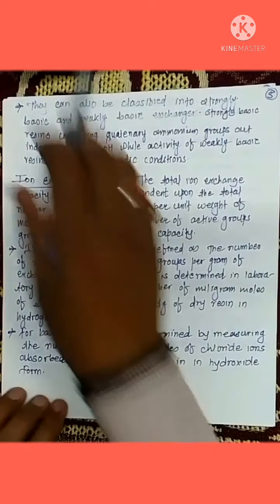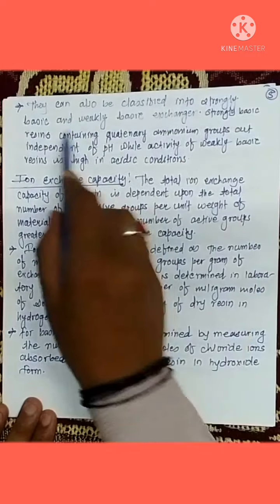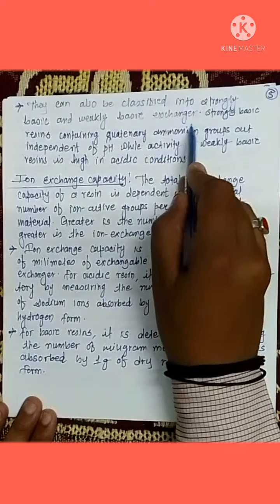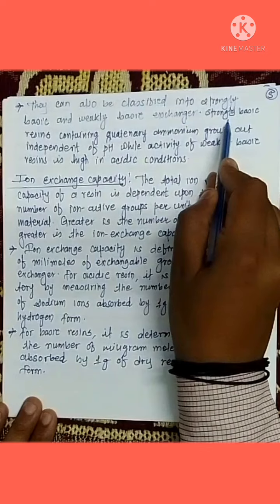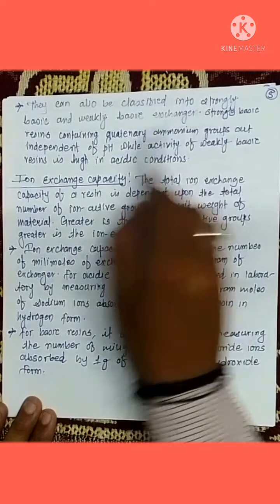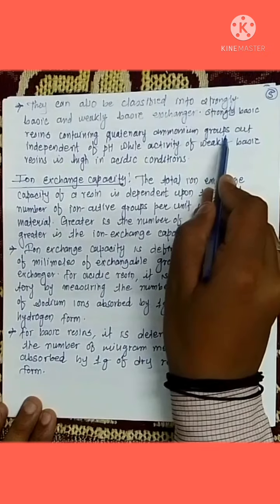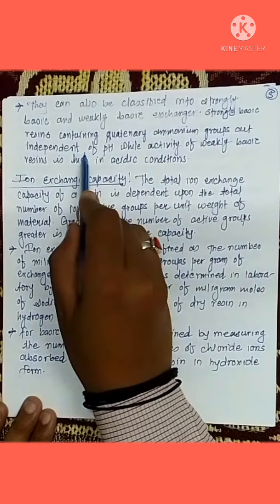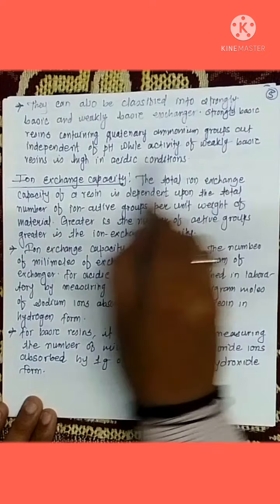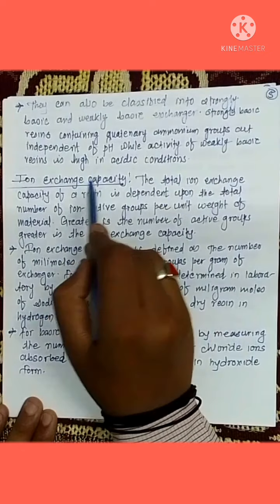Anion exchangers can also be classified into strongly basic and weakly basic exchangers. Strong basic resins containing quaternary ammonium groups act independent of pH, while the activity of weakly basic resins is high in acidic conditions.